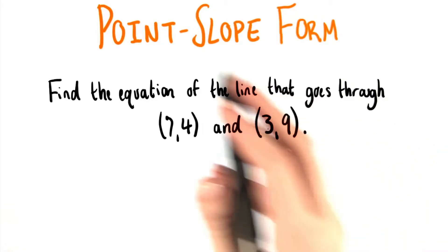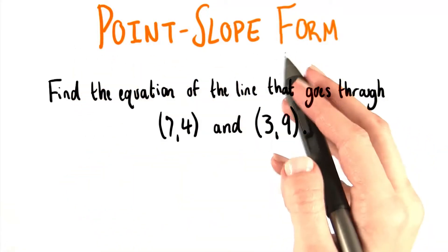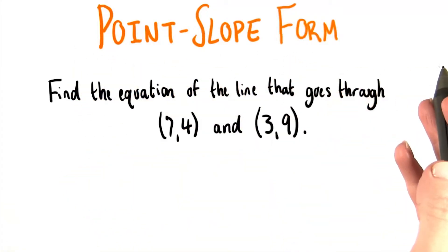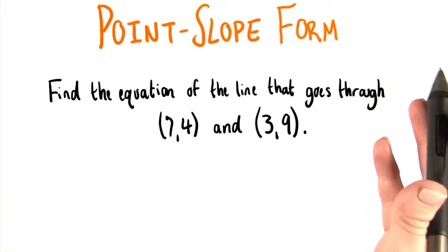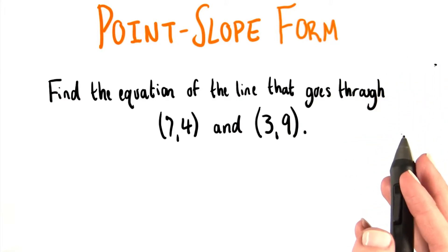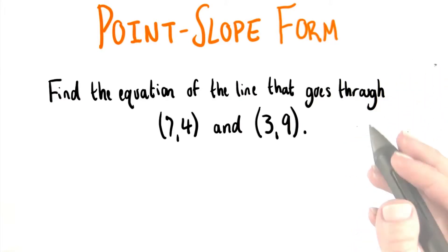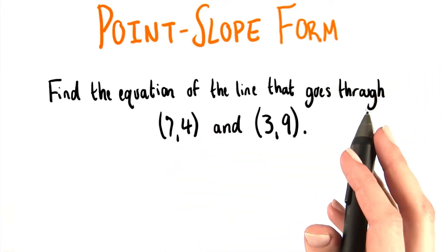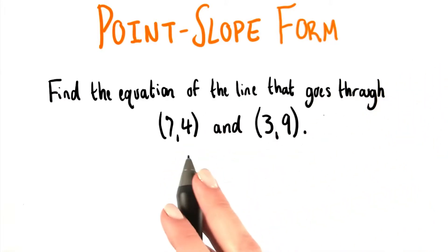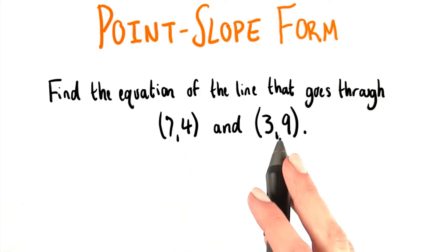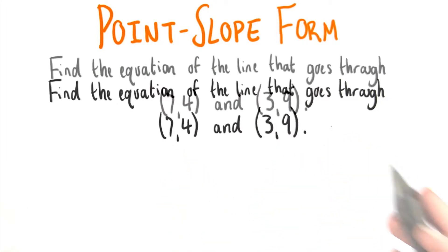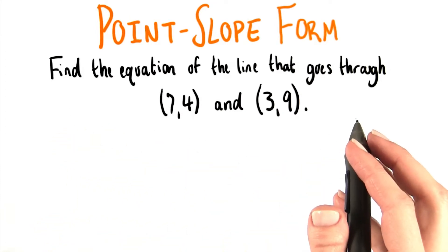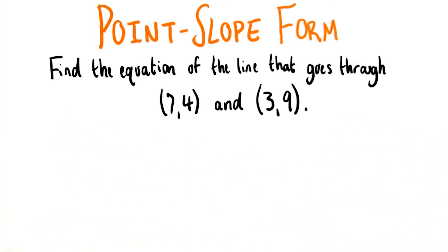Both point-slope form and slope-intercept form are super useful, depending on what information we start out with in our problem. What if we know that a line goes through two points, (7, 4) and (3, 9)? Let's see if we can come up with an equation for this. Instead of doing this all in one step, let's break it down.